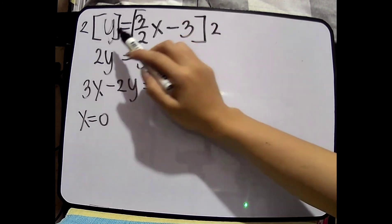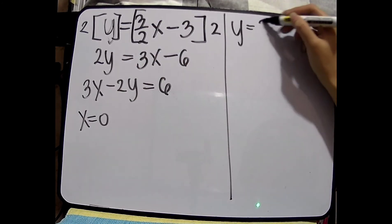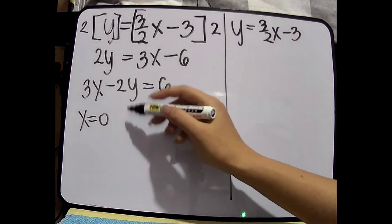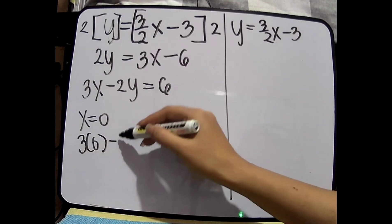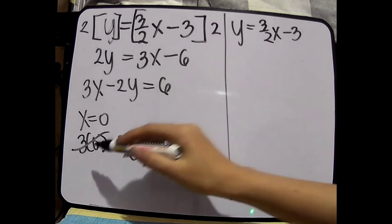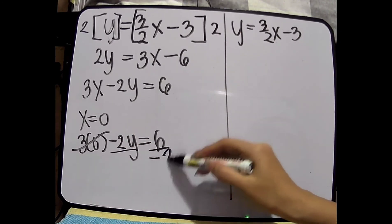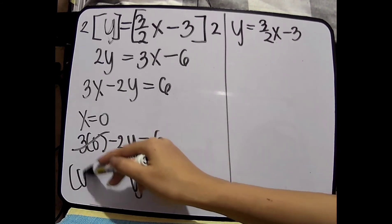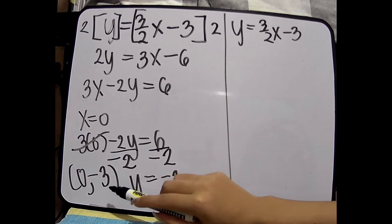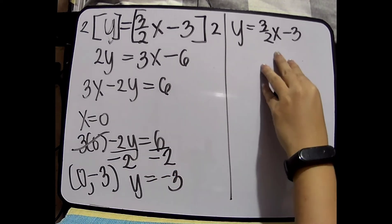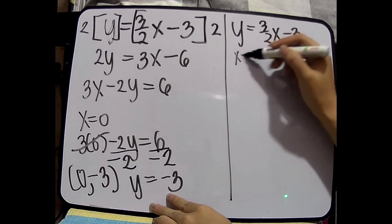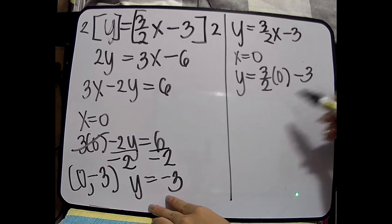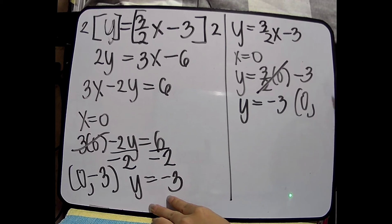Now, let's substitute x is equals to 0. Pero, pwede naman — if you're comfortable, okay na rin naman ito using y equals 3/2 times x minus 2. Pwede na tayo dyan mag-substitute ng 0. So, 3 times 0 minus 2y is equals to 6. Canceled, kasi 0 na yung maging value, so I will be dividing both sides by negative 2. So, y is equals to negative 3. So, my ordered pair is (0, negative 3) — dahil 0 namin sinubstitute, and then negative 3 yung nakuha.